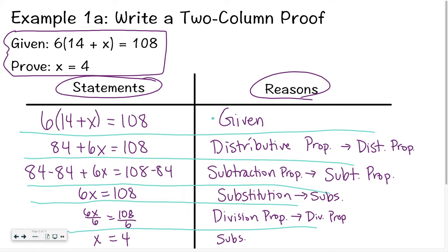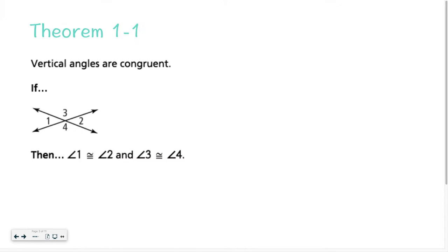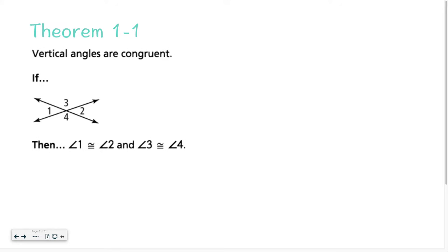Hopefully that doesn't seem too bad. It takes a little while to get used to, but you'll get there. Something for you to screenshot and remember is something called vertical angles — this is your Theorem 1-1 in your book. Something to note: vertical angles are congruent.